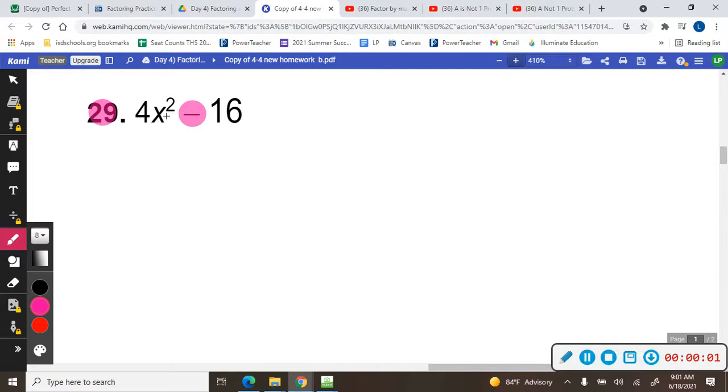So now we have 4x² minus 16. That's only two terms with a minus. Step number one would be to look for a GCF, and I noticed that they're both divisible by four, so I'm going to divide them both by four and put that out here.